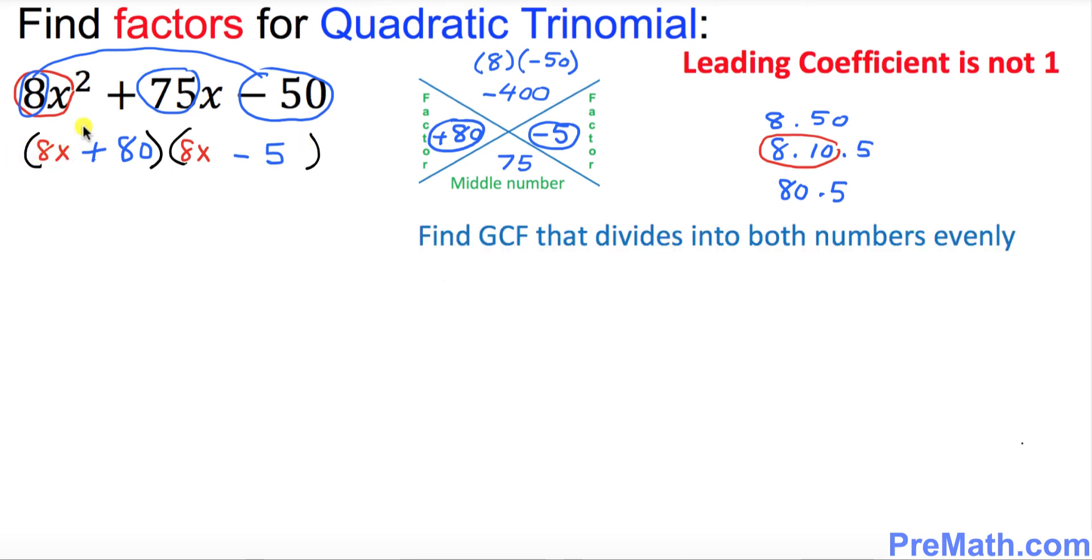Now our next step. Look at the very first parentheses, these numbers 8 and 80. Find the GCF for these two numbers. That means we are going to find the largest number that divides into both of these numbers at the same time and that obviously the GCF is 8. Go ahead and divide both these numbers by 8.